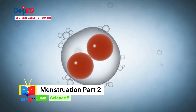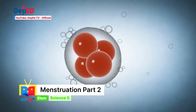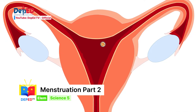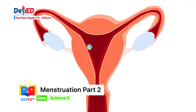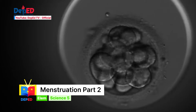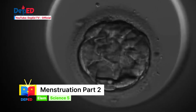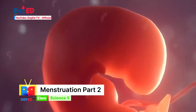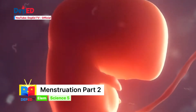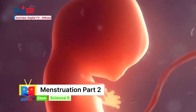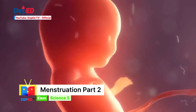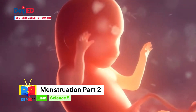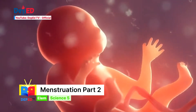The union of the sperm and the egg cell is called fertilization. When an egg is fertilized, a new life begins. After fertilization, the zygote or fertilized egg gets implanted in the wall of the uterus. It undergoes cell division. The cell keeps on dividing to form different body parts. The developing unborn baby inside the mother's womb is called the fetus. It stays there and is nourished by the mother for nine months, and when the right time comes, it is now ready to be born.